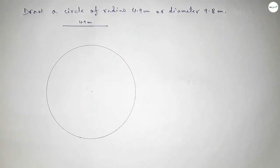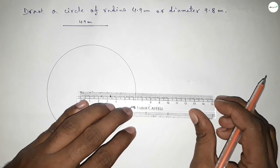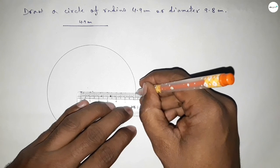And this represents a circle with radius four point nine centimeter. Now joining this one.